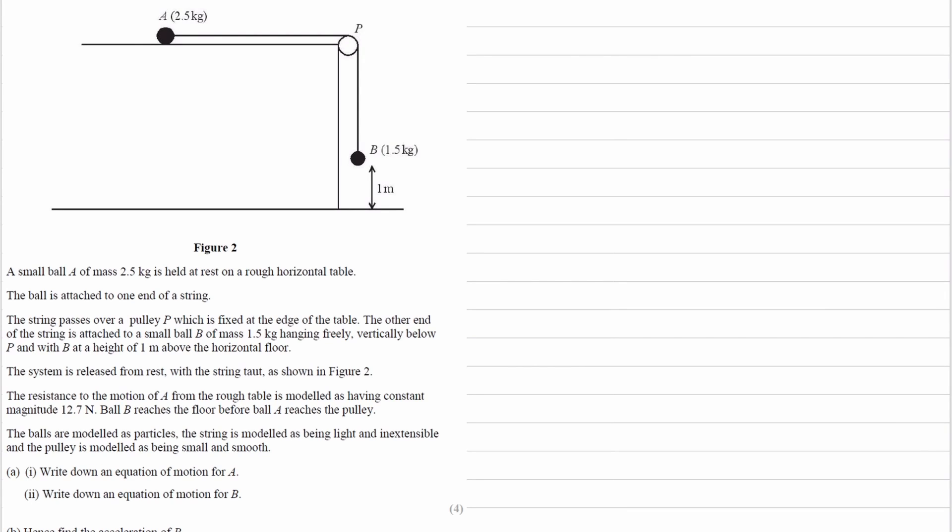So we have a small ball A of mass 2.5 kg held at rest on a rough horizontal table. The fact that it is rough means there is friction, so this ball experiences a friction force. We're told that the string passes over a pulley fixed at the edge of a table. The other end of the string is attached to ball B, that has a mass of 1.5 kg, it's hanging freely, a metre above the ground.